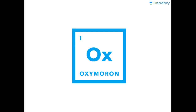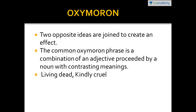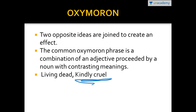Now we have oxymoron. Oxymoron is the placing of two opposite ideas joined together to create an effect. However, the contrasting words or phrases are not always glued together into one word. Take these examples: 'living dead' and 'kindly cruel' — two completely contradictory ideas placed together. The contrasting ideas may also be spaced out in a sentence, for example: 'In order to lead, you must walk behind.' If you have to lead, you'd normally stand in front — but here you must walk behind.